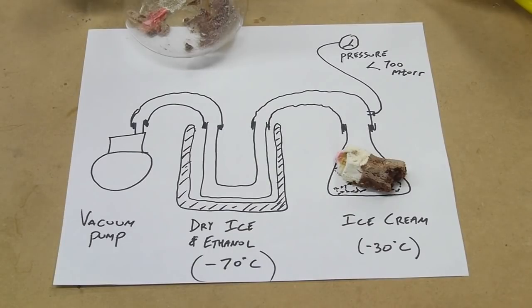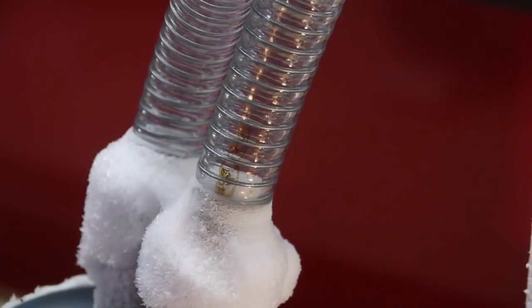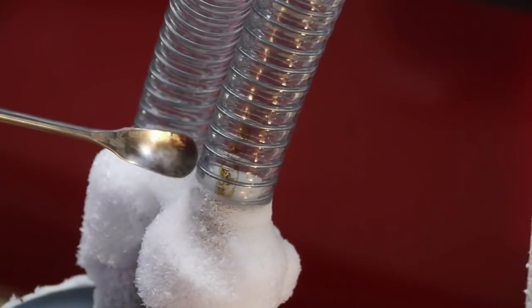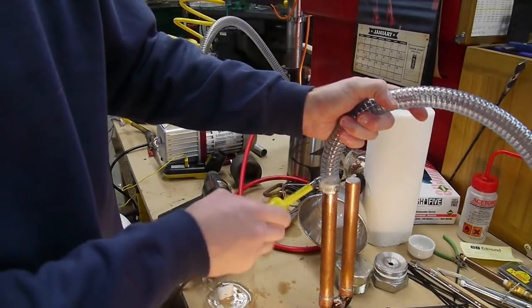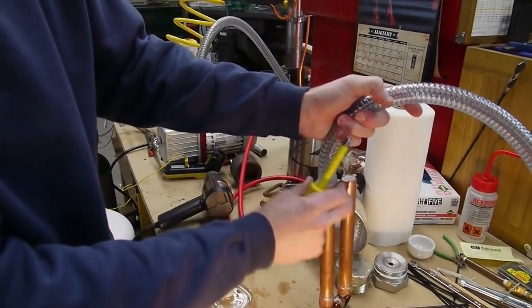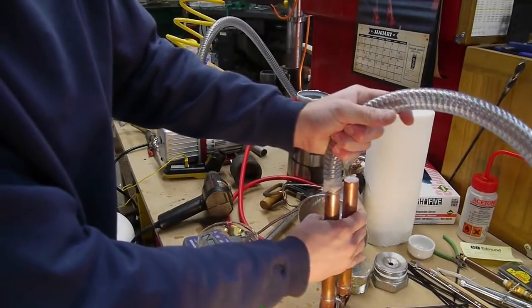I set this up last night before going to bed and let it run overnight. When I came in this morning there was a huge chunk of ice. The ice was even visible sticking out of the cold trap and the pressure gauge was reading high, higher than it can measure.